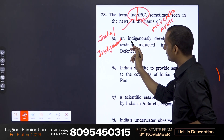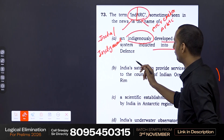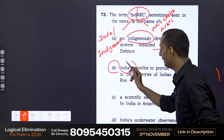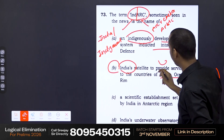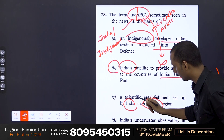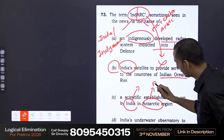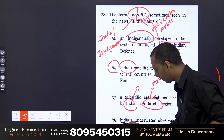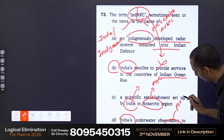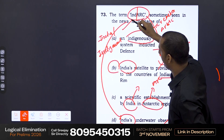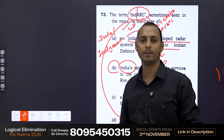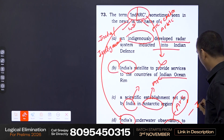The first option talks about an indigenously developed radar inducted into Indian defense — which has relation with indigenous but no ARK or Arctic is mentioned. Option B talks about an India satellite in the Indian Ocean, which does not have any relation with the word ARK. Option C talks about a scientific establishment by India in the Antarctic, but the word ARK is not mentioned. Option D talks about India and also a scientific study in the Arctic region — ARK is directly related to Arctic and India is directly related to INTH. So option D is the only option that satisfies both INTH and ARK. Therefore, you can go with INTHARK as the answer.